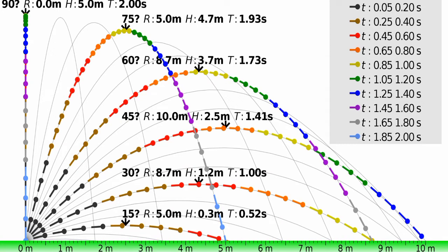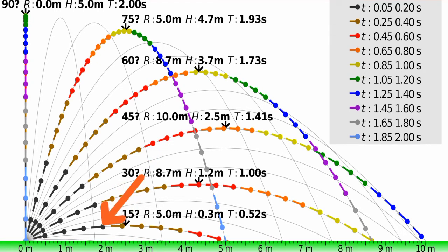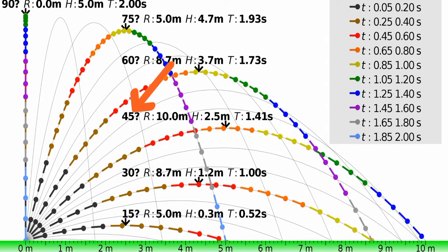This diagram shows different trajectories for different launch angles that have the same initial speed. The launch angle determines the maximum height, time in the air, and maximum horizontal distance of the projectile. When a projectile is launched horizontally, the initial launch angle is zero degrees. In this case, the projectile travels purely in the horizontal direction with no vertical displacement initially, and gravity acts vertically downward. Angles between 45 and 90 degrees are also considered.